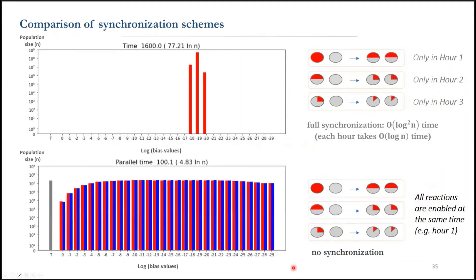As we see in this simulation, with no synchronization scheme, all the bias values appear quickly in log n time. Since we allow all the splits to happen, they will quickly consume the neutral agents, which slows down the protocol. Because for the next non-null interaction, we should wait for the scheduler to pick two agents with the same bias value to cancel.